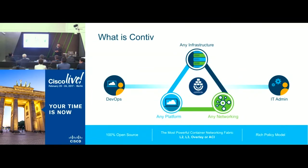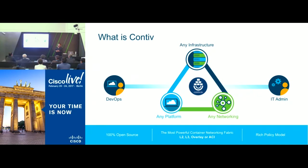Now let's look at Contiv. We've talked about CNM and CNI models and their reference implementations. With Contiv, you can achieve both connectivity and policy. Contiv is a 100% open source project started by Cisco. It provides various networking backend implementations: whether L2 with VLANs, VXLAN, L3 BGP, or ACI — you can use a single Contiv framework to achieve any of these backends.